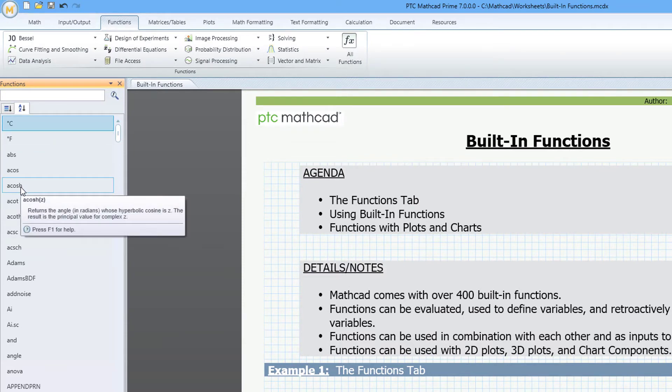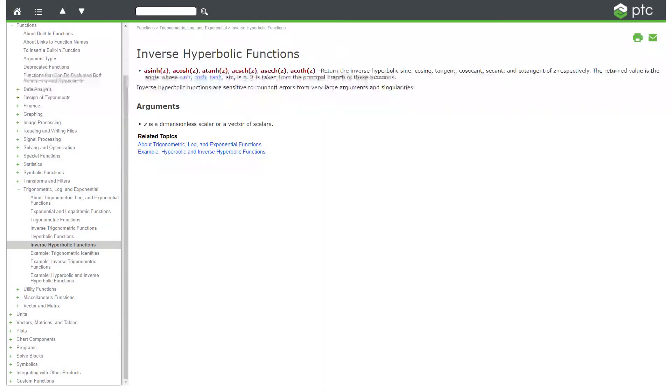To access Help for a given function, use the F1 key. This will open the PTC help page for the function.